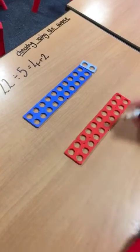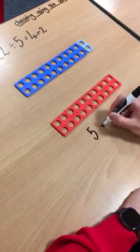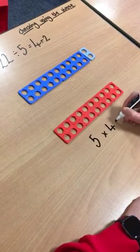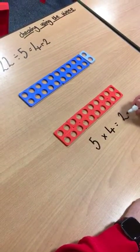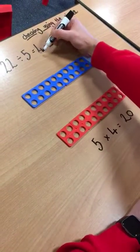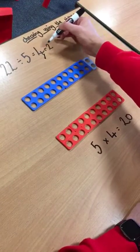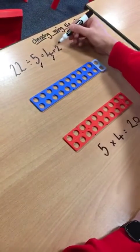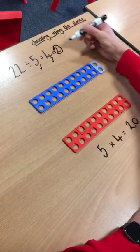So my calculation would be 5 times 4, which as you can see is 20. So I've used this whole number and I've multiplied it by this one. But I've still got my 2 left over.